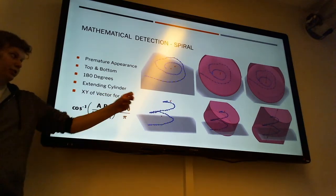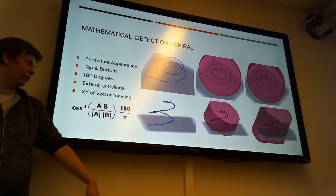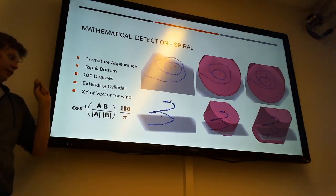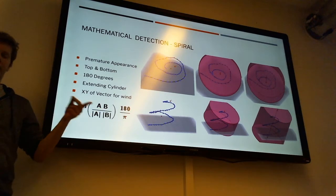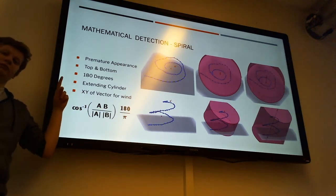So, after we extend that, we get the full cylinder, as you can see over there, and that's how we detect all the different points, using the previous mentioned formula.